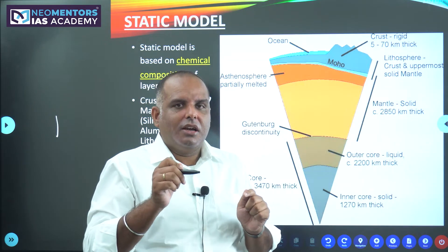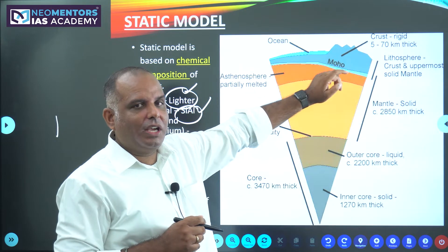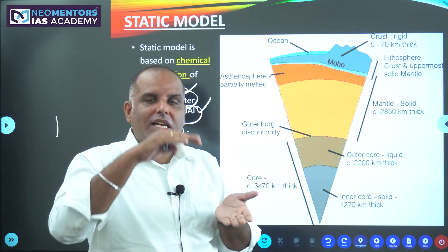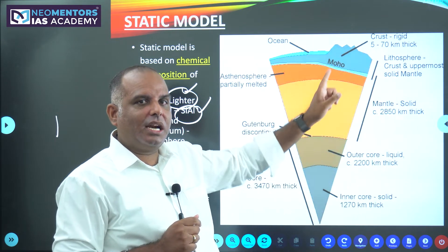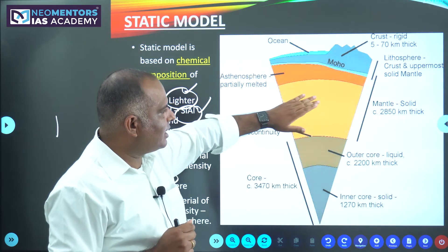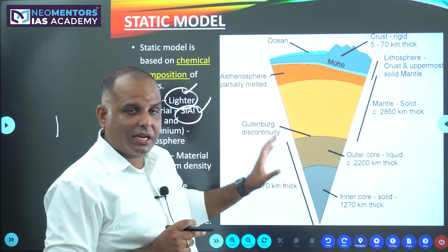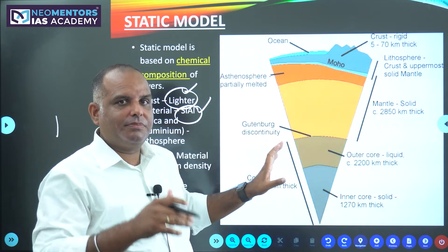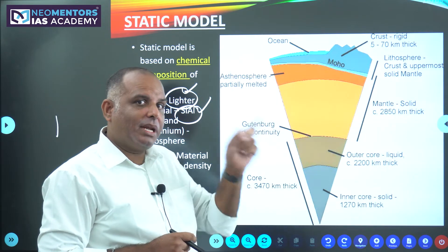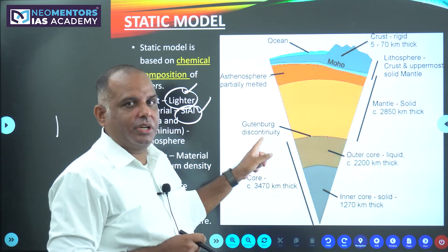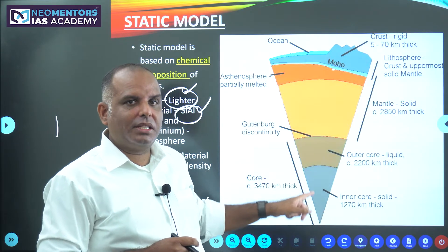There should be some nomenclature for the line separating these layers — we call it a discontinuity. Between crust and mantle, we have Mohorovičić discontinuity. Mohorovičić discontinuity separates crust and mantle. Similarly, there is a layer of separation between mantle and core, named Gutenberg discontinuity. So we have two discontinuities: Mohorovičić discontinuity separating the crust and mantle, and Gutenberg discontinuity separating the mantle and core.